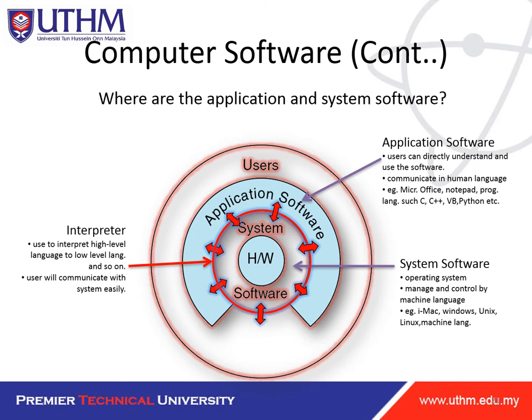System software examples include Mac OS, Windows, UNIX, Linux, and machine language. Application software includes Microsoft Office, Notepad, and programming languages such as C++, C, Python, and Visual Basic. Users can directly understand and use application software. An interpreter is used to interpret high-level language to low-level language. You need to know what an interpreter is, what application software is, and what system software is.